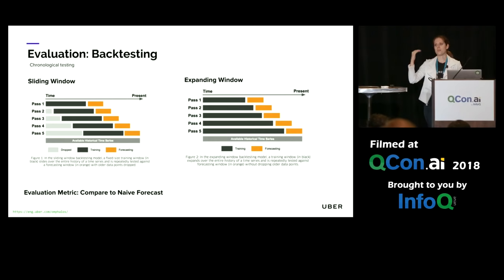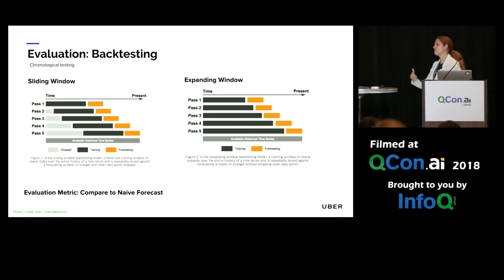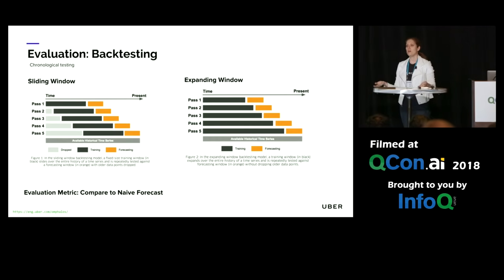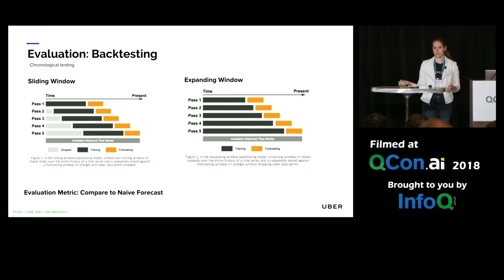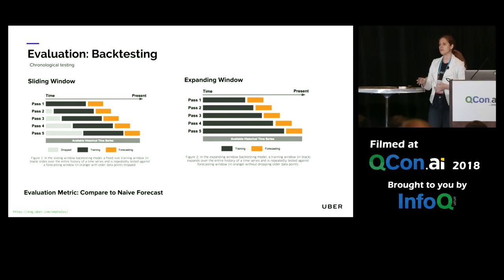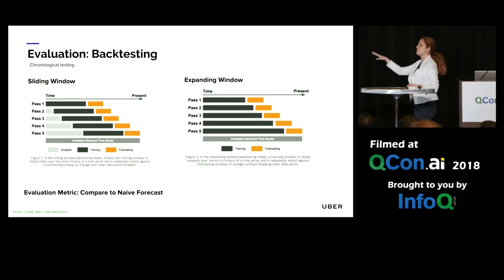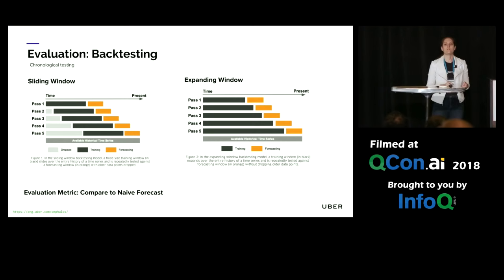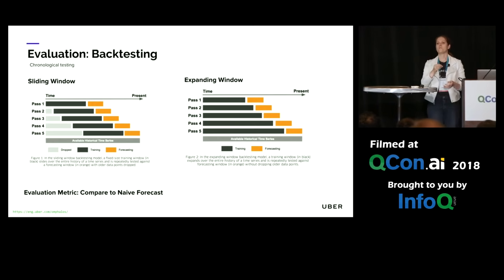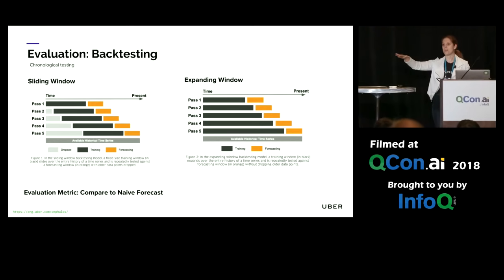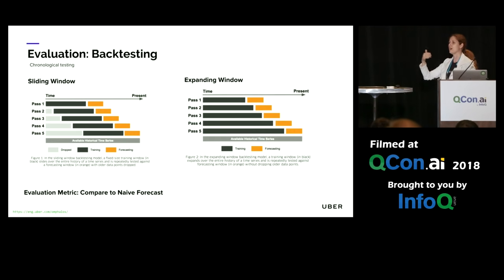In terms of evaluation metrics for comparing various forecasting methodologies, there are quite a few, both absolute and percentage-based ones. One I want to call out in particular is comparing to a naive forecast. A naive forecast basically means you assume today's value will hold for tomorrow, giving you a nice baseline that you can compare more complex algorithms against.